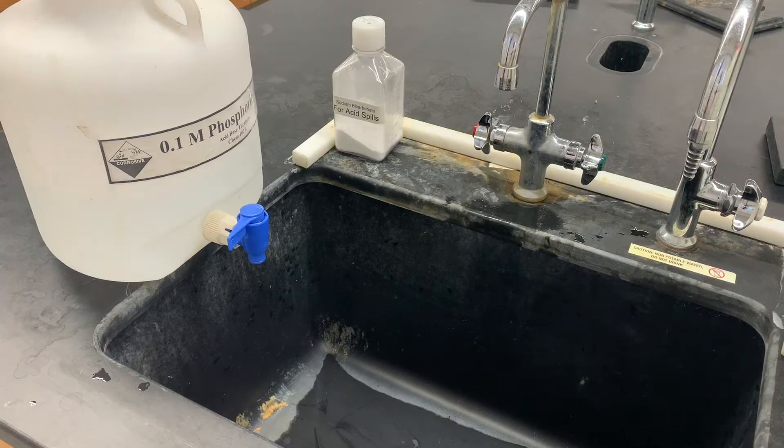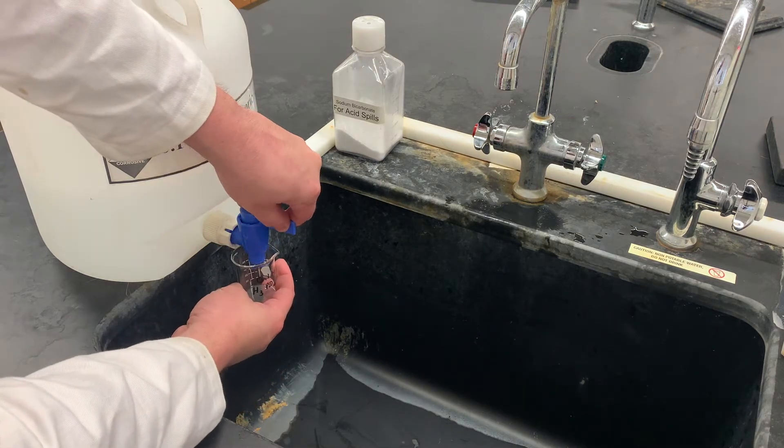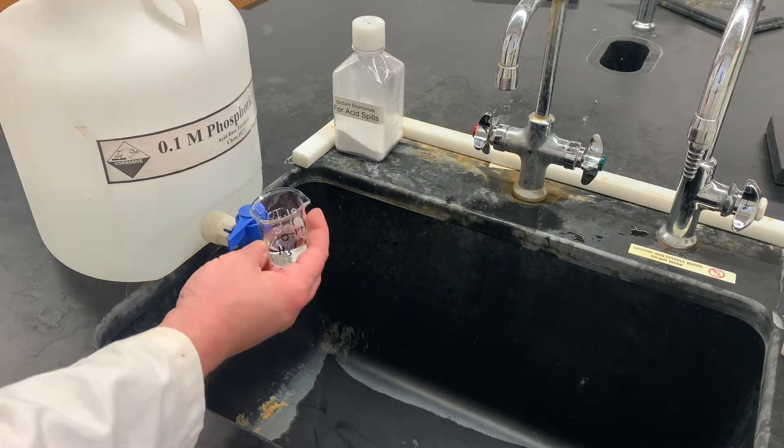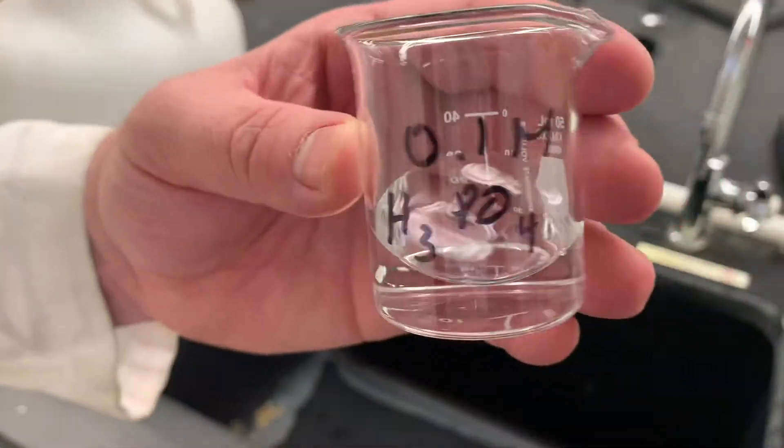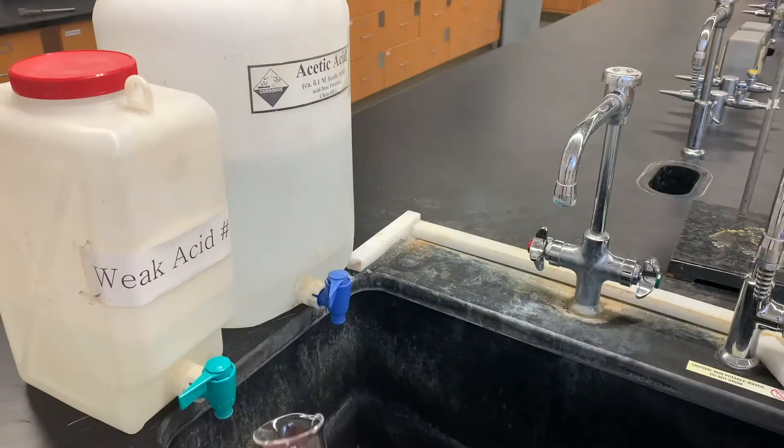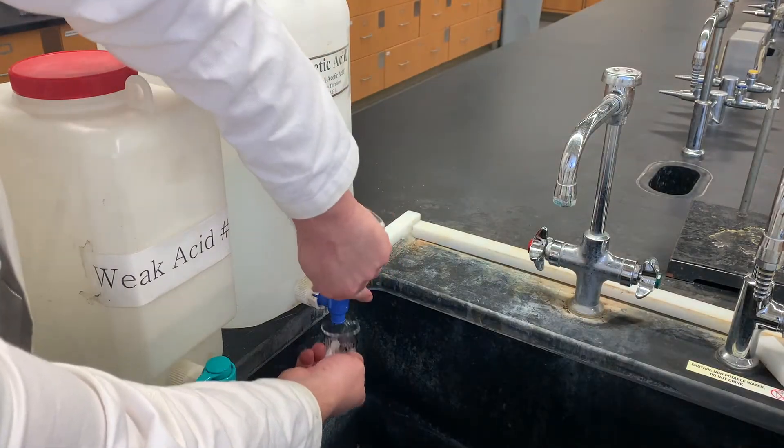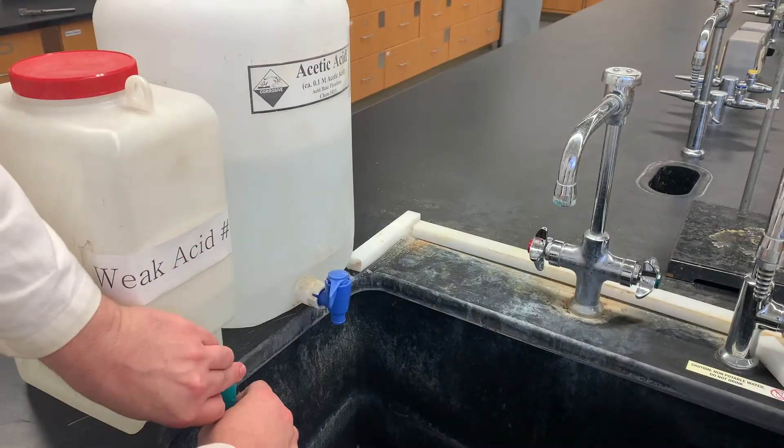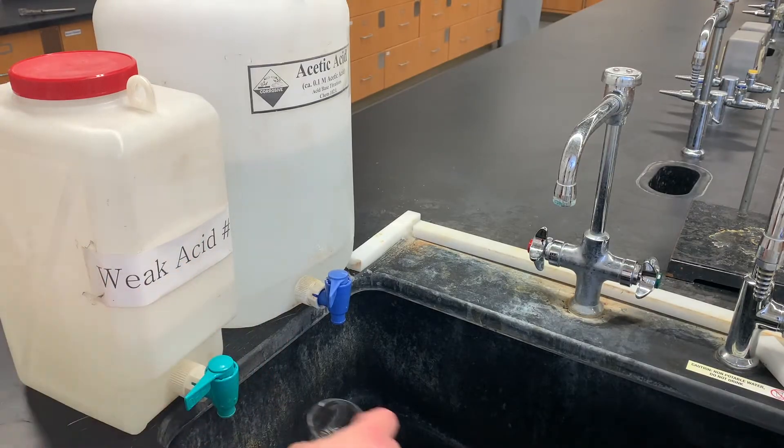We also grab some phosphoric acid. We don't need nearly as much. If it ever has trouble coming out, you might have to loosen the lid here. And at a different sink, we will need to grab our acetic acid, as well as our unknown weak acid. That would be right here. There should be plenty.